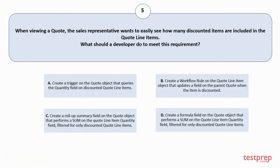A. Create a trigger on the Quote object that queries the Quantity field on discounted Quote Line Items. B. Create a Workflow Rule on the Quote Line Item object that updates a field on the parent Quote when the item is discounted. C. Create a roll-up summary field on the Quote object that performs a SUM on the Quote Line Item Quantity field, filtered for only discounted Quote Line Items. D. Create a formula field on the Quote object that performs a SUM on the Quote Line Item Quantity field, filtered for only discounted Quote Line Items. The correct answer is option C.